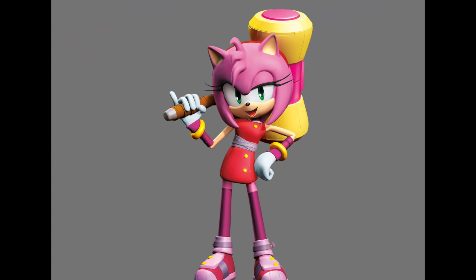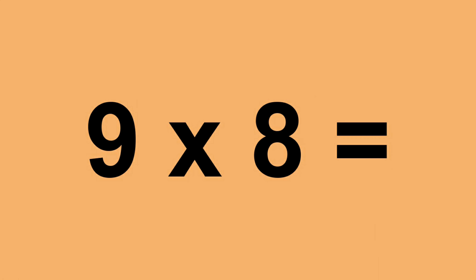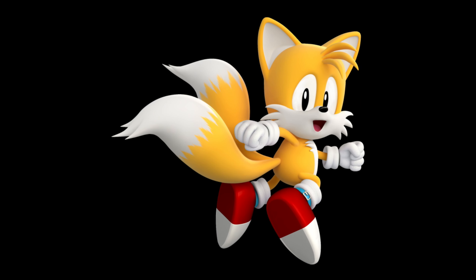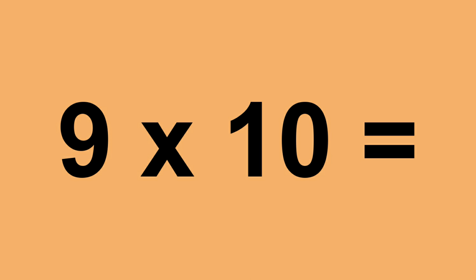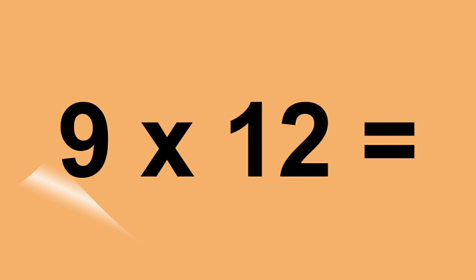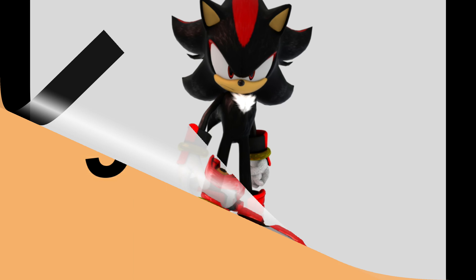Nine times seven equals sixty-three. Nine times eight equals seventy-two. Nine times nine equals eighty-one. Nine times ten equals ninety. Nine times eleven equals ninety-nine. Nine times twelve equals one hundred and eight.